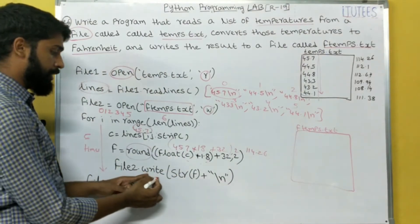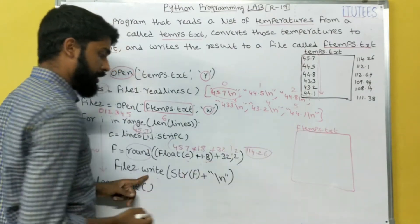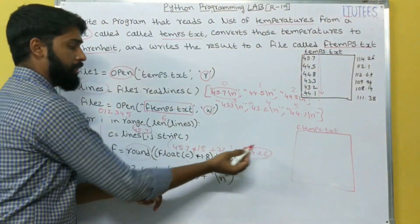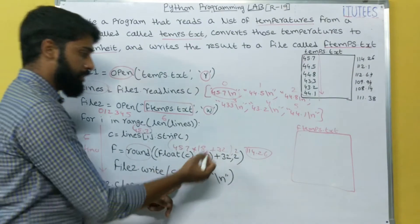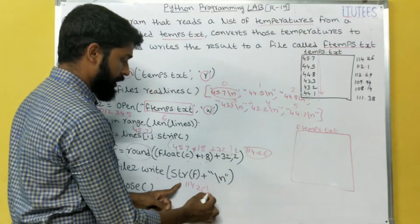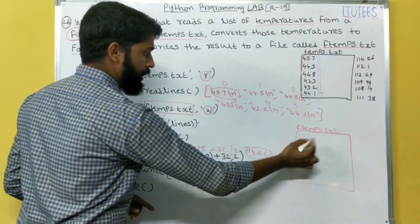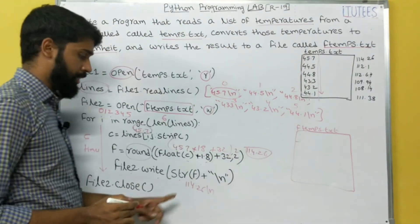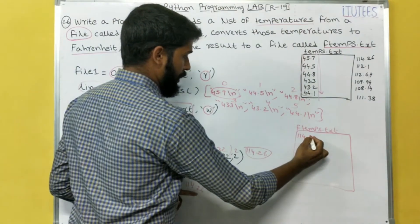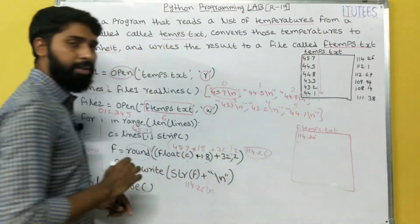So file2.write() — we write this data onto the file. We use str() to convert the float back into a string, so we write '114.26\n'. That means after writing, the cursor moves to the next line, and 114.26 is placed in the file.